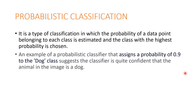Probabilistic classification is another interesting type. In this, the probability of a data point belonging to each class is estimated, and the class with the highest probability is chosen. For instance, a probabilistic classifier can assign a probability of 0.9 to the dog class, saying it is quite confident that the animal in that particular image is a dog.